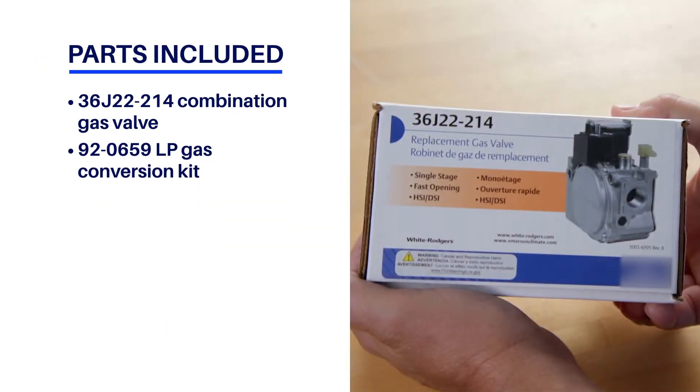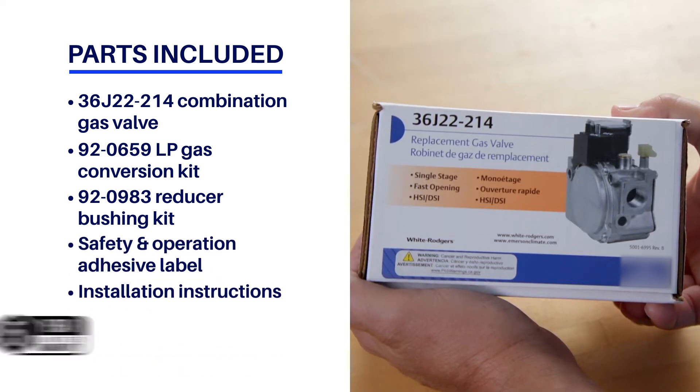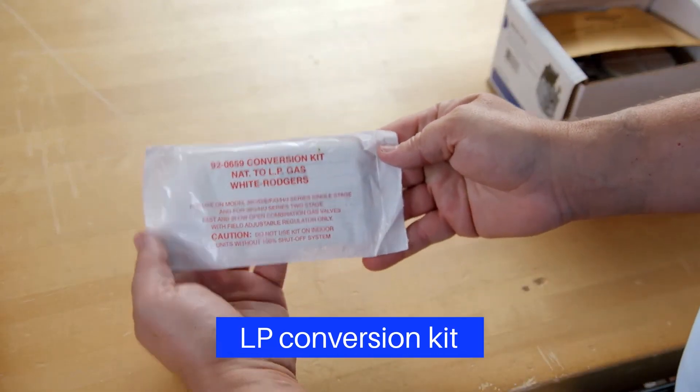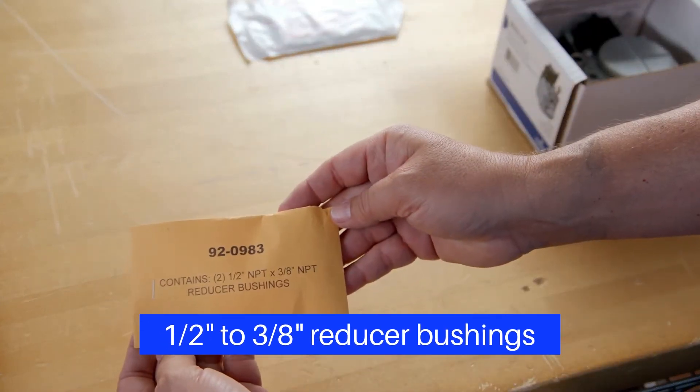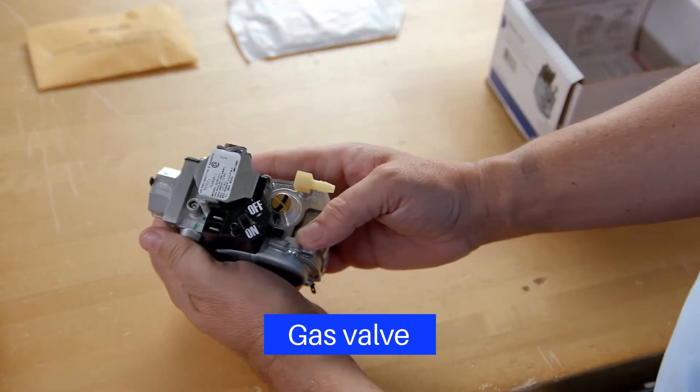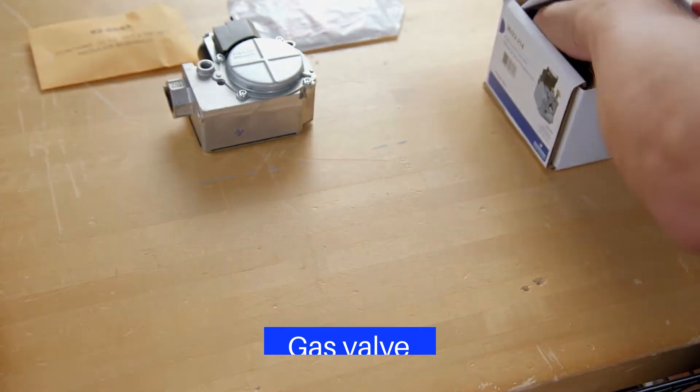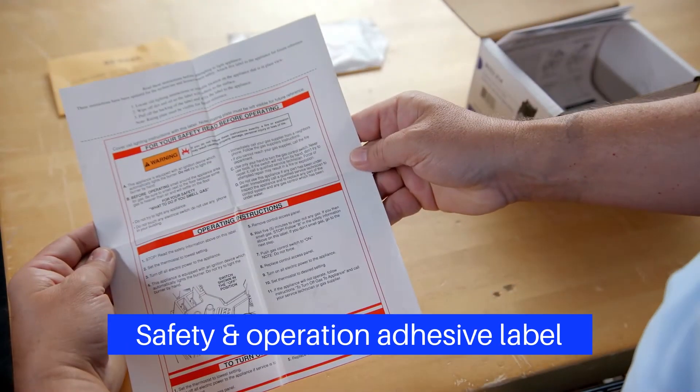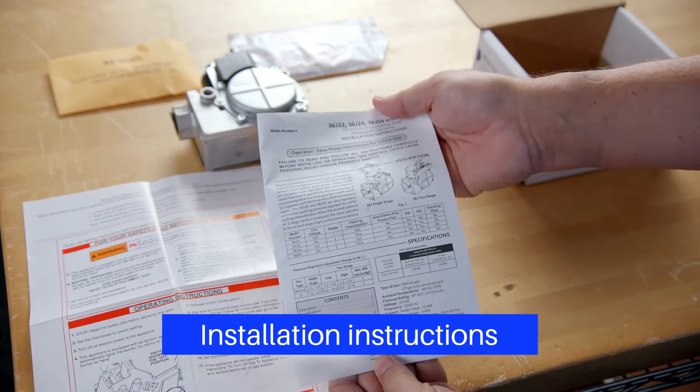The kit includes materials needed to replace a fast opening combination gas valve used in common direct spark and hot surface ignition systems for single stage fast opening applications. The box includes a 920659 LP Gas Conversion Kit, a 920983 Reducer Bushing Kit, a 36J22214 Combination Gas Valve, a Safety and Operation Adhesive Label, and step-by-step instructions for easy installation.